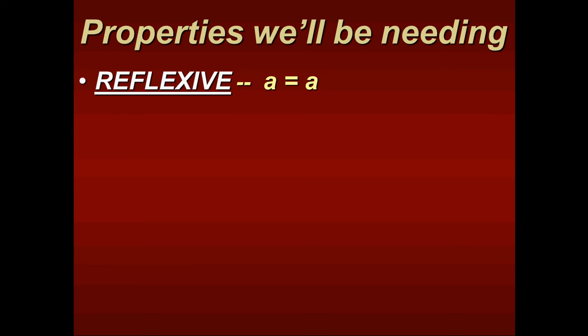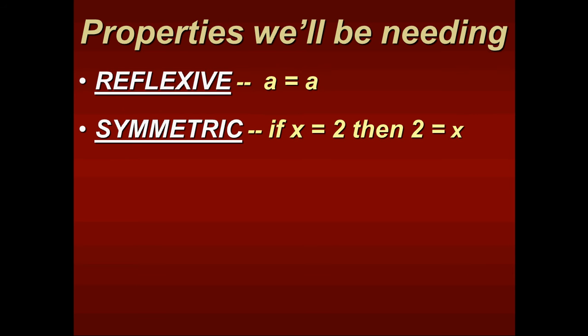The first property is the reflexive property. It says that a equals a, which means that whatever you have, it basically equals itself. So that's the reflexive property. The next one is the symmetric property. It's kind of tough to do this without a smart board. But if x equals 2, then 2 equals x. And what you'll notice is that if you can think about a line of symmetry going between those two equations, then in that case, they're equal. So think about that in terms of a line of symmetry.